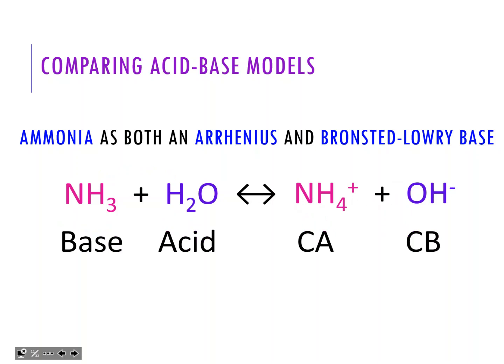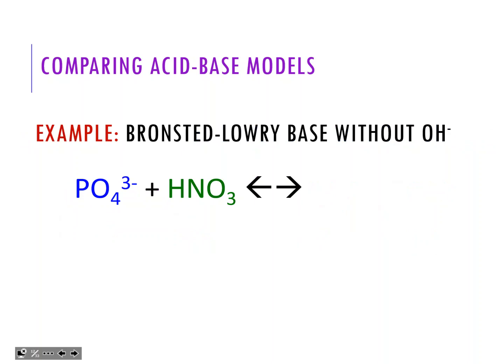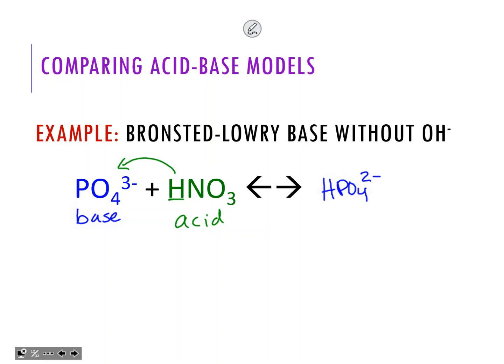There are Bronsted-Lowry bases where you do not see hydroxide at all. For example, phosphate reacting with nitric acid. Out of these two, nitric acid has to be the acid because it's the only one that has an H to donate, so it's going to donate it over here. That means phosphate is acting as the base.